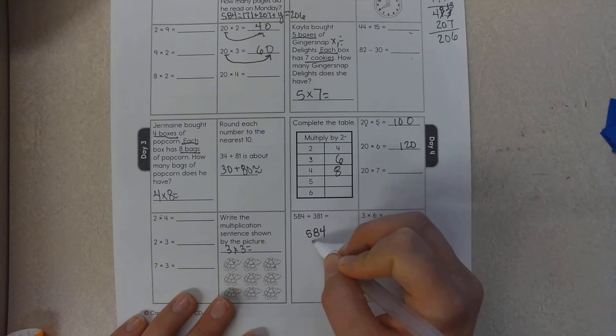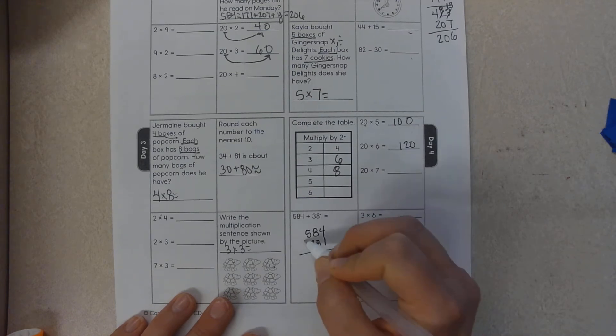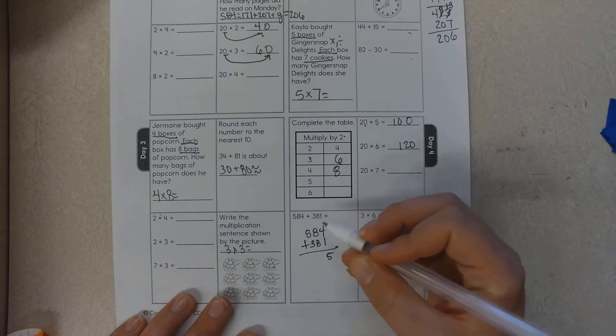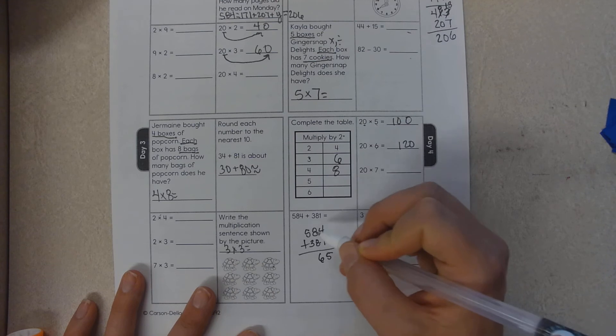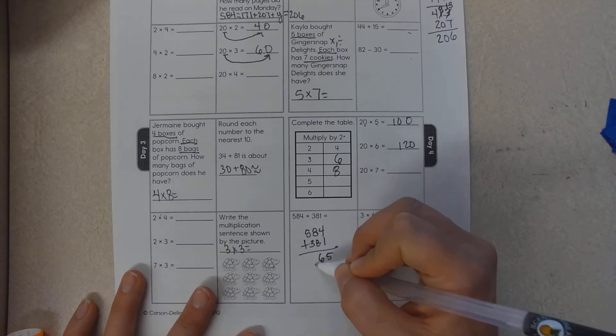584 plus 381. Four plus one is five. Eight tens plus eight tens is sixteen tens, so you could write sixteen here.